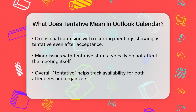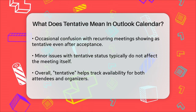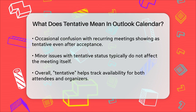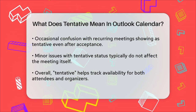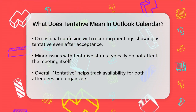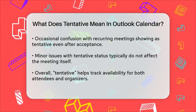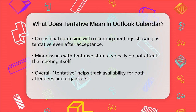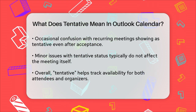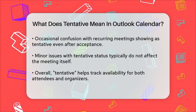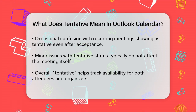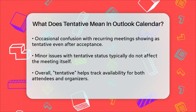So to sum it up, tentative in Outlook means you're not sure about attending the meeting yet, and it helps both you and the meeting organizer keep track of your availability until you make a final decision.